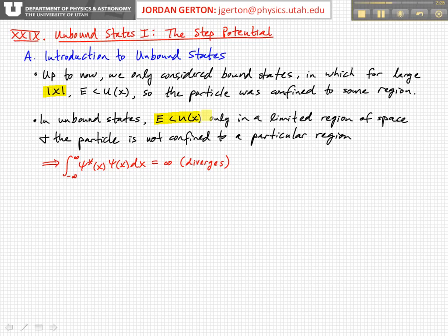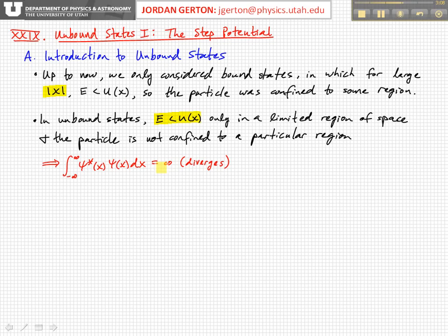In the case that the particle is not confined, what this means is that the particle can be found, at least over some part of the potential, anywhere. And so if we try to normalize the wave function — integrating psi-star psi over all space — that integral is going to diverge, going toward infinity, because over at least a semi-infinite part of space the particle can be found anywhere.